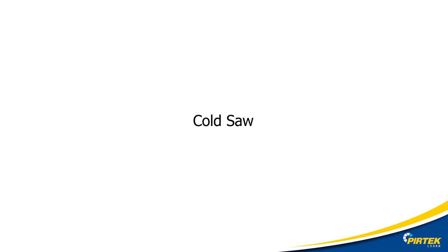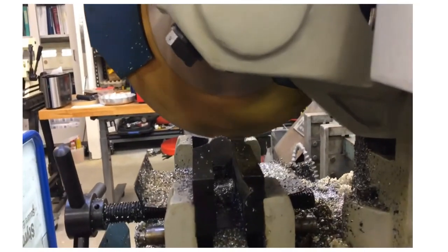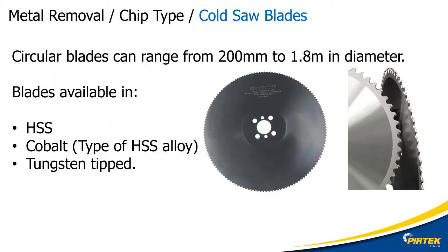Let's have a look at the cold saw. A cold saw uses a rotating blade to cut through material. It is closely related to the drop saw commonly used in the woodwork industry, but of heavier construction with more sophisticated cutting blade geometries. These machines are available with or without coolant pumps. Blades are available in high-speed steel and cobalt alloys and can be tungsten tipped. Cold saw blades can be sharpened and re-tipped if necessary.